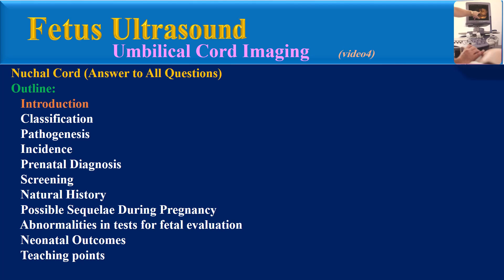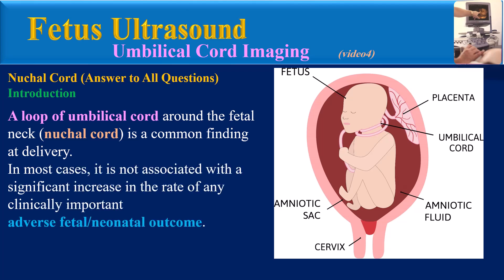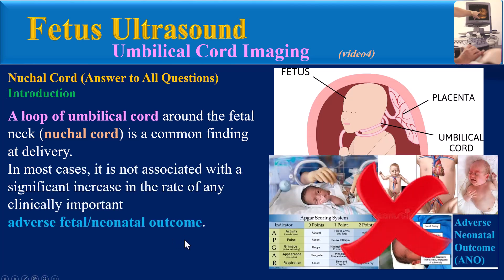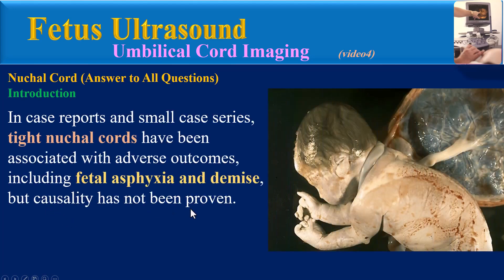Introduction: A loop of umbilical cord around the fetal neck, or nuchal cord, is a common finding at delivery. In most cases, it is not associated with a significant increase in the rate of any clinically important adverse fetal or neonatal outcome. But in case reports and small case series, tight nuchal cords have been associated with adverse outcomes, including fetal asphyxia and demise, though causality has not been proven.